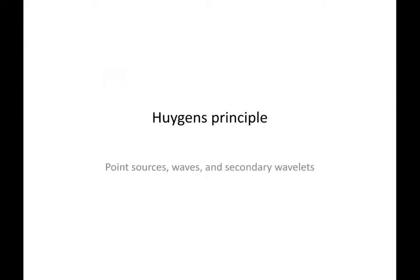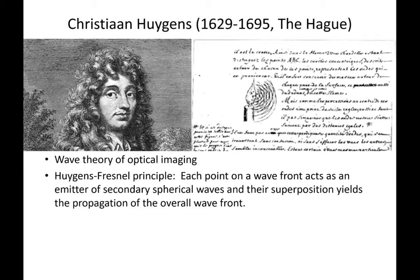In this part I'm going to introduce Huygens' principle, which is essential to this course. Christian Huygens was a Dutch astronomer and contemporary of Leeuwenhoek — they almost certainly knew each other. He was interested in taking nice images of the stars, so it's not surprising that much of the physics we use in the microscope comes from astronomy.